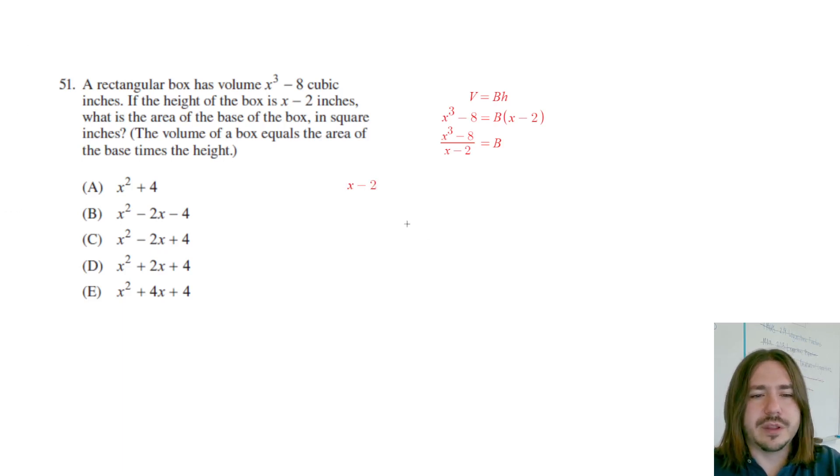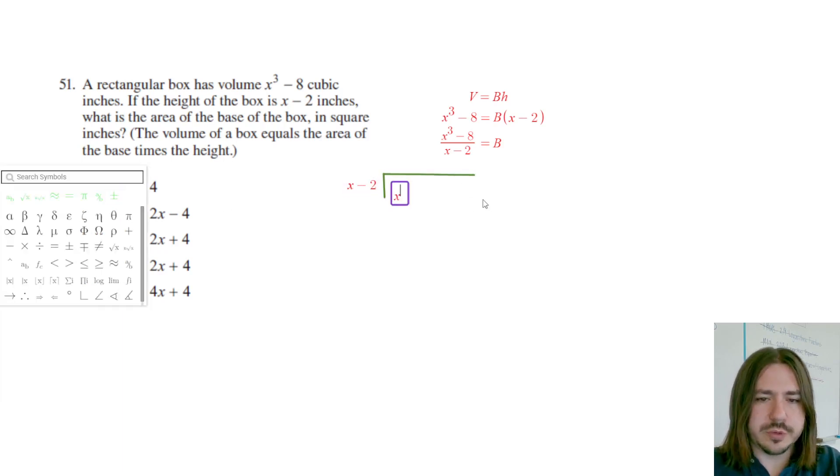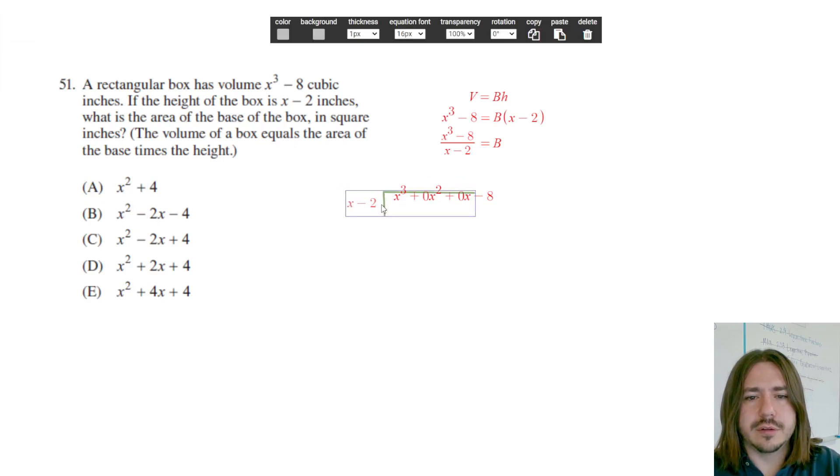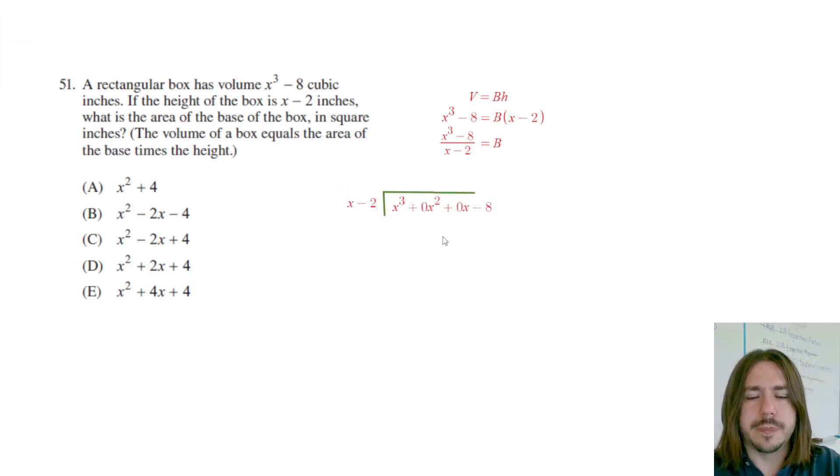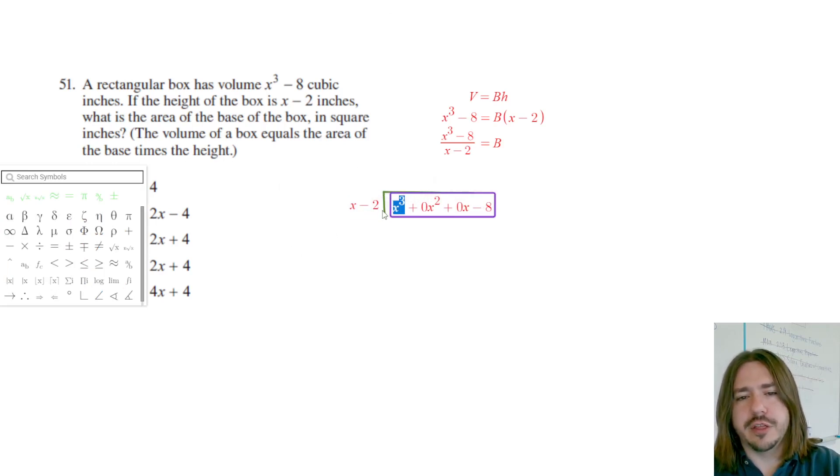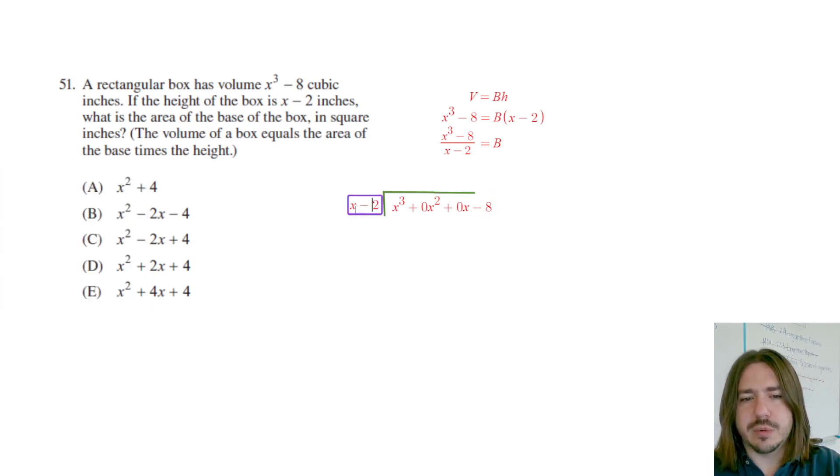Let's start with long division. I'm going to put x minus two on the outside of this long division bar and on the inside I'll put the x cubed, but I'm going to make sure to account for all the missing degree terms in between the cubic term and the constant term. So zero x squared, zero x, and then the minus eight. The way that long division works is you want to ask yourself what do I need to multiply x by to make it x cubed. Well x times x squared is x cubed, so I'm going to write x squared up here.